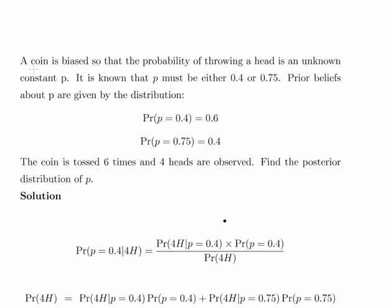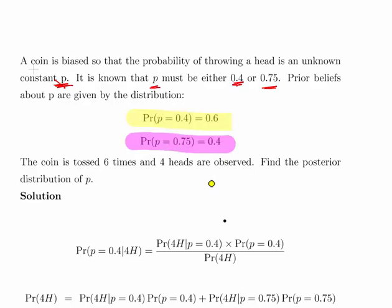A coin is biased so that the probability of throwing a head is an unknown constant p. It is known that p must either be 0.4 or 0.75. Prior beliefs about p are given by the following distribution: we believe the probability of p being 0.4 is 0.6, and the probability of p being 0.75 is 0.4.